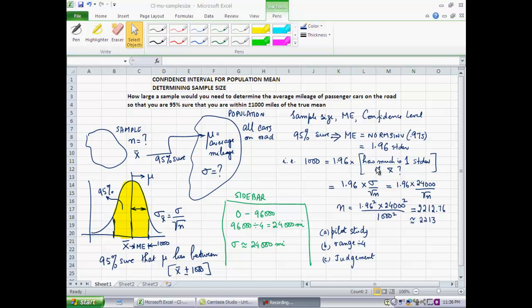How much is 1 standard deviation of x bar, the statistic I'm using to come up with the confidence interval? 1,000 miles equals 1.96 standard deviations multiplied by how large 1 standard deviation is, which is sigma divided by square root of n, the population standard deviation divided by the square root of the sample size. We are ultimately trying to work our way towards what this n should be. You can see that the stumbling block here is the unknown sigma.